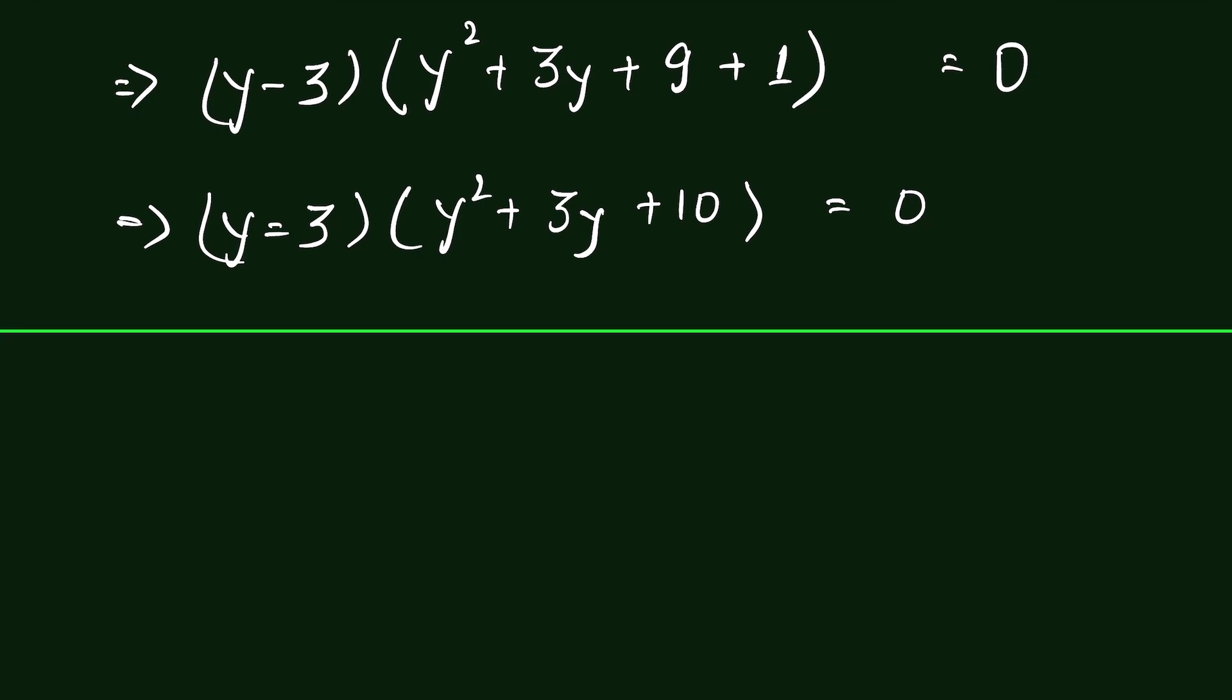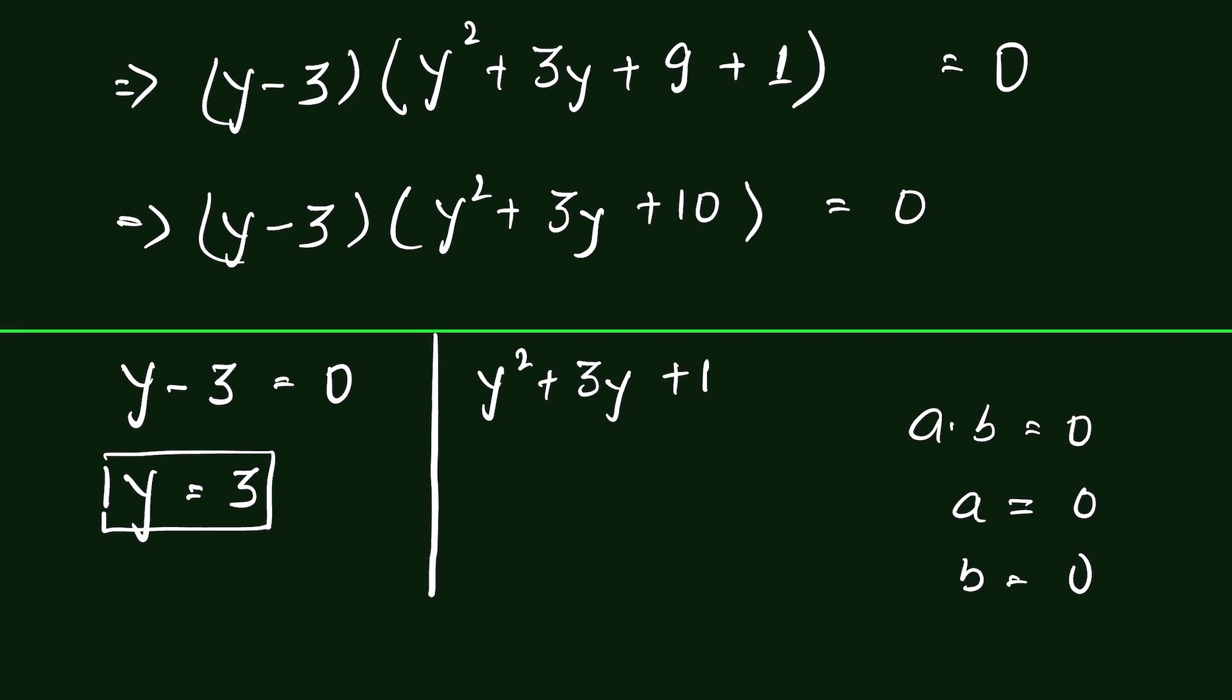Now when a times b is equal to 0, then either a is equal to 0 or b is equal to 0. Therefore, we have y minus 3 is equal to 0, one solution, then y is equal to 3 and when y square plus 3y plus 10 is equal to 0.